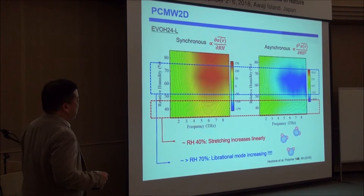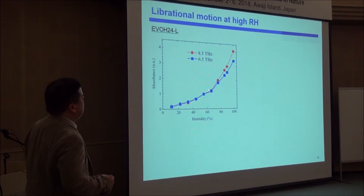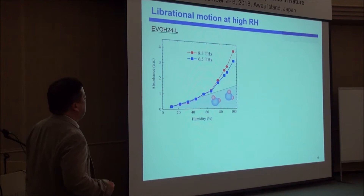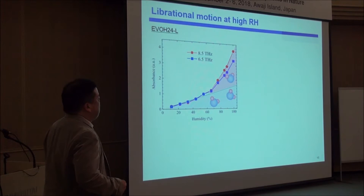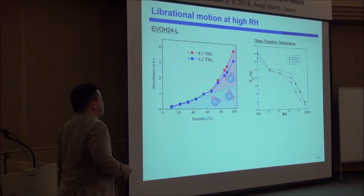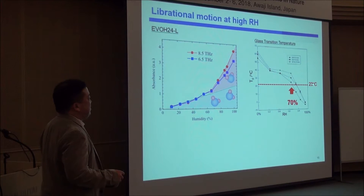Let's go back to the original data. This is absorption intensity as a function of humidity at 6.5 and 8.5 THz. At lower humidity it increases linearly due to the stretching motion. But at higher humidity, the librational component increases — there is a transition point at about 70% humidity. It is known that the glass transition temperature of this polymer changes with humidity, and 70% humidity is just the crossing point at our room temperature.